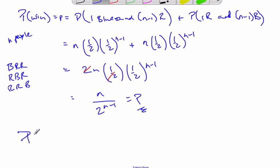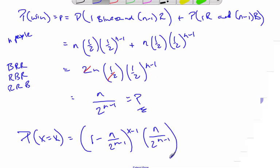If I want to find the overall probability where x is geometric of x happening, it's going to be 1 minus p, which is 1 minus n over 2 to the n minus 1. That's going to happen x minus 1 times all these failures, and then finally the last one that happens is a success.